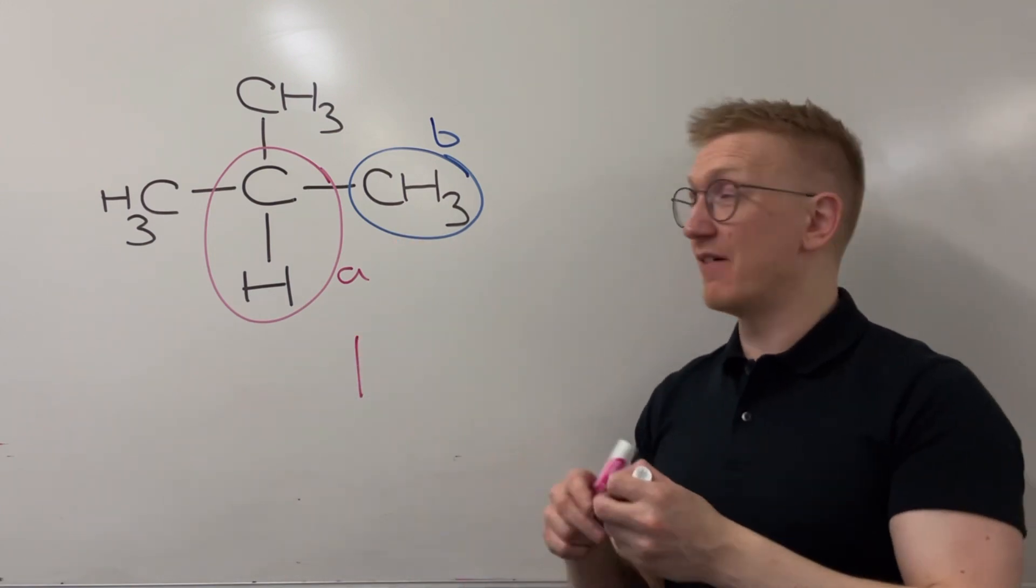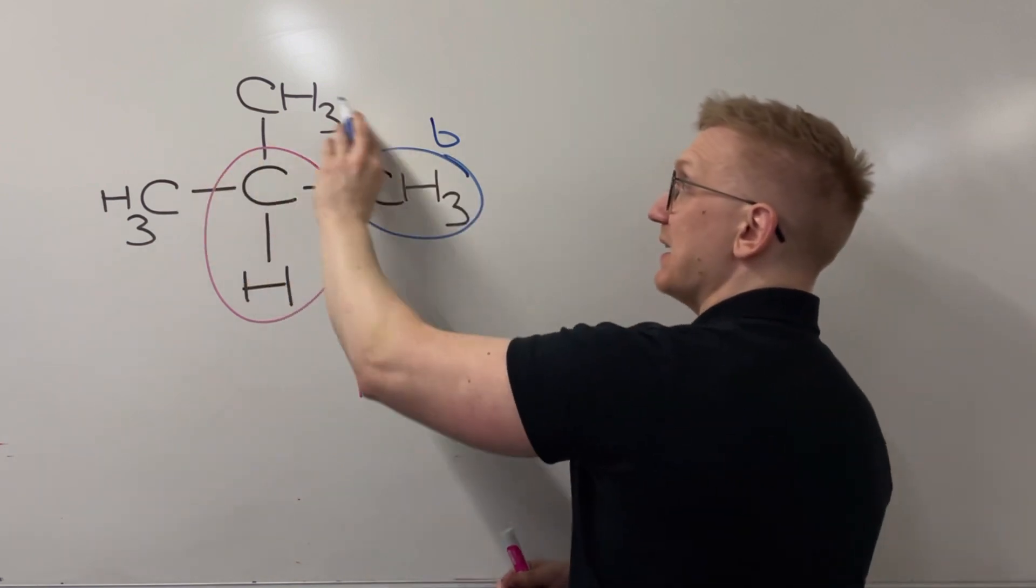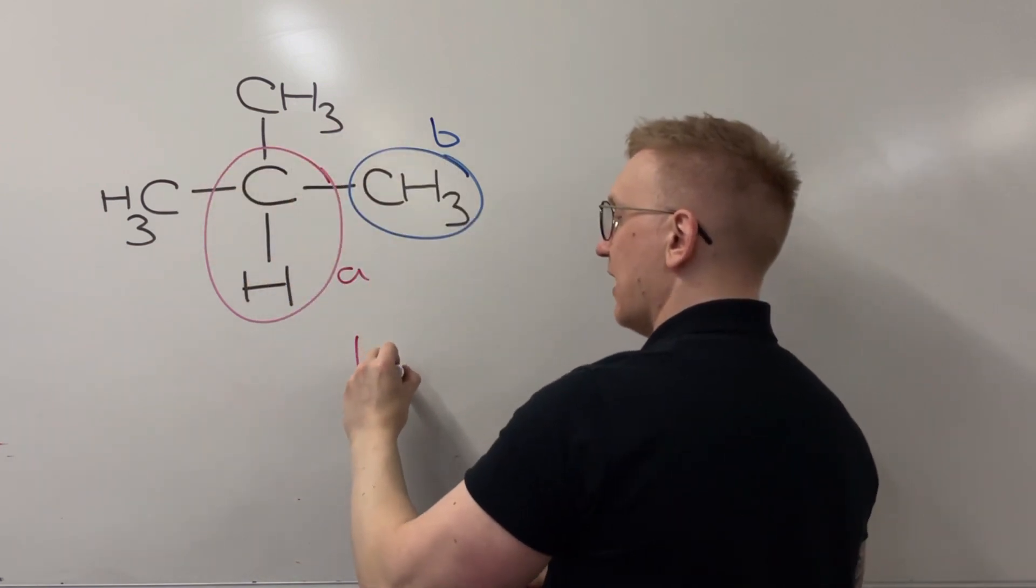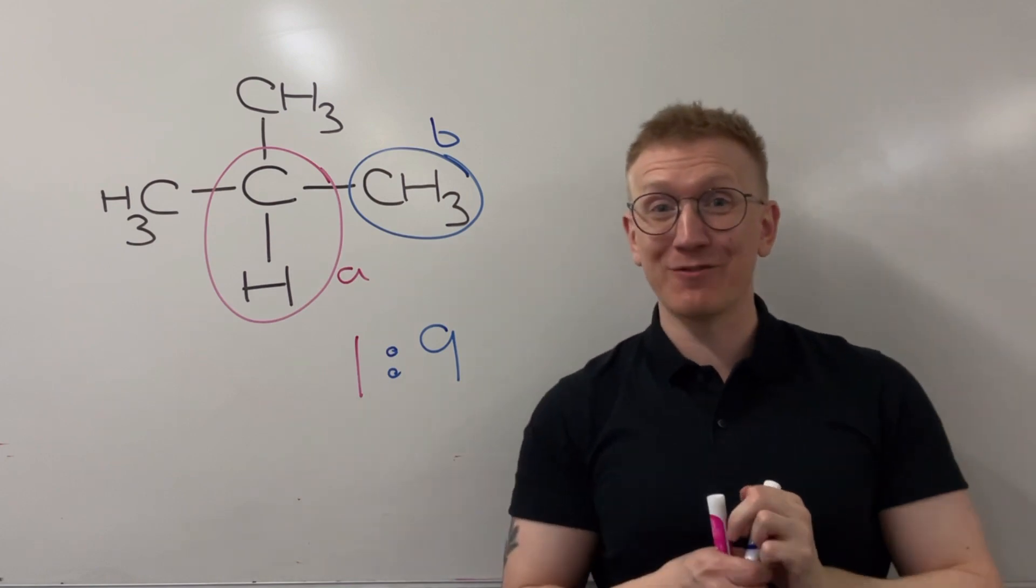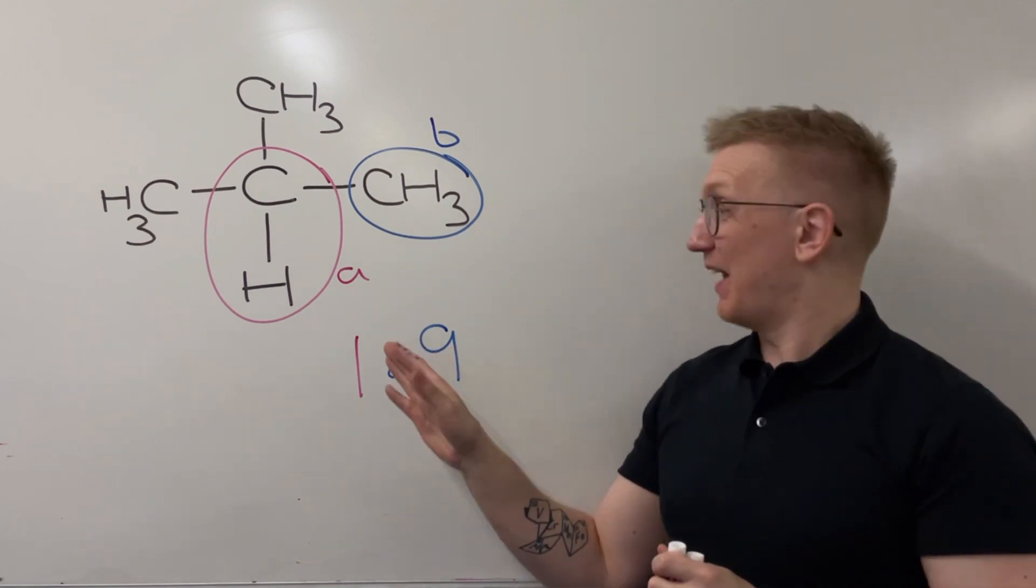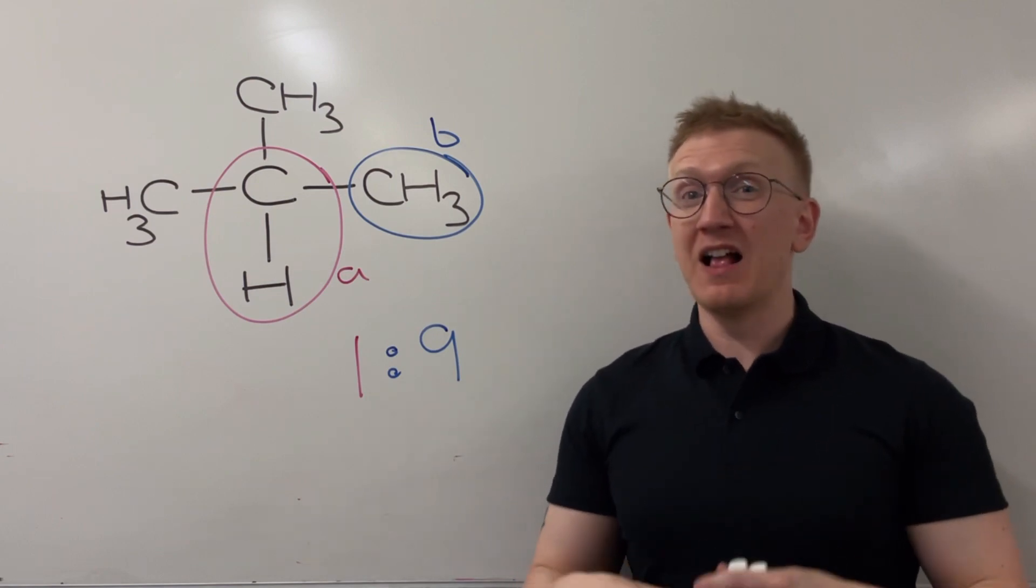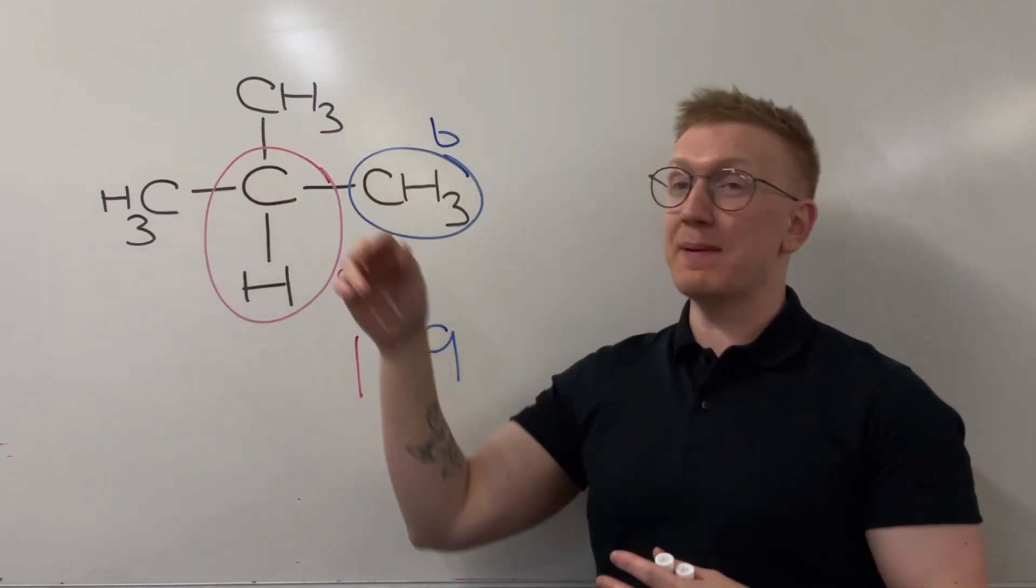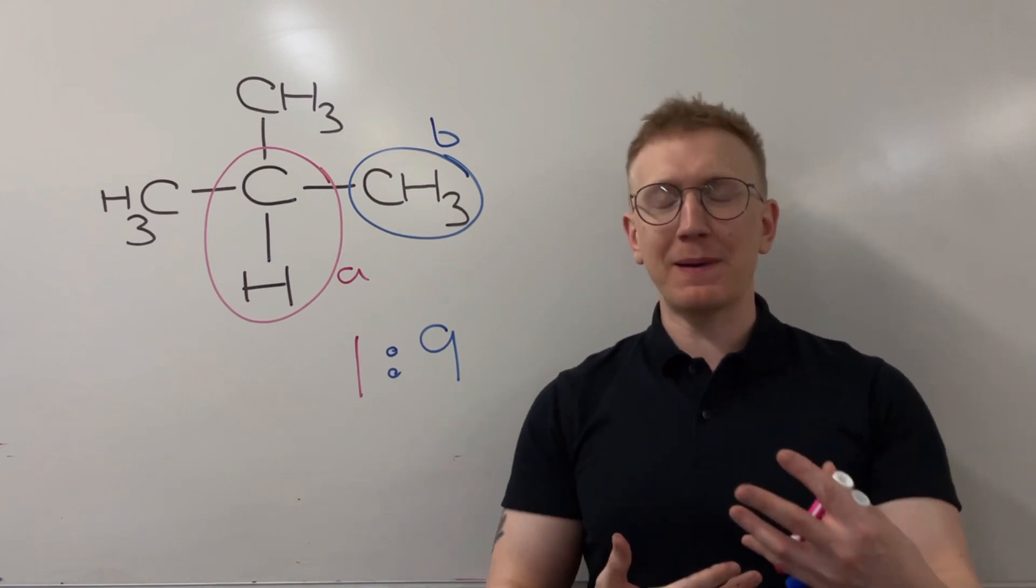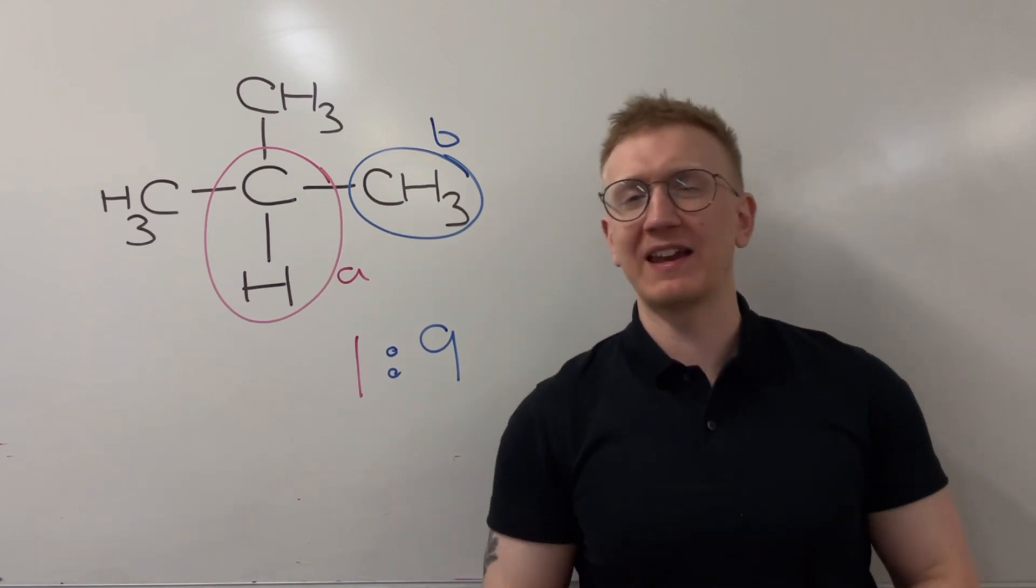And then for peak B, it's going to be all of them through here. So it's actually going to be a one to nine ratio. That's massive. And whenever you see a nine in an A-level exam on the hydrogen NMR, the chance is that it is actually going to be three CH3s and that comes with exam experience. It's something you should certainly be looking out for.